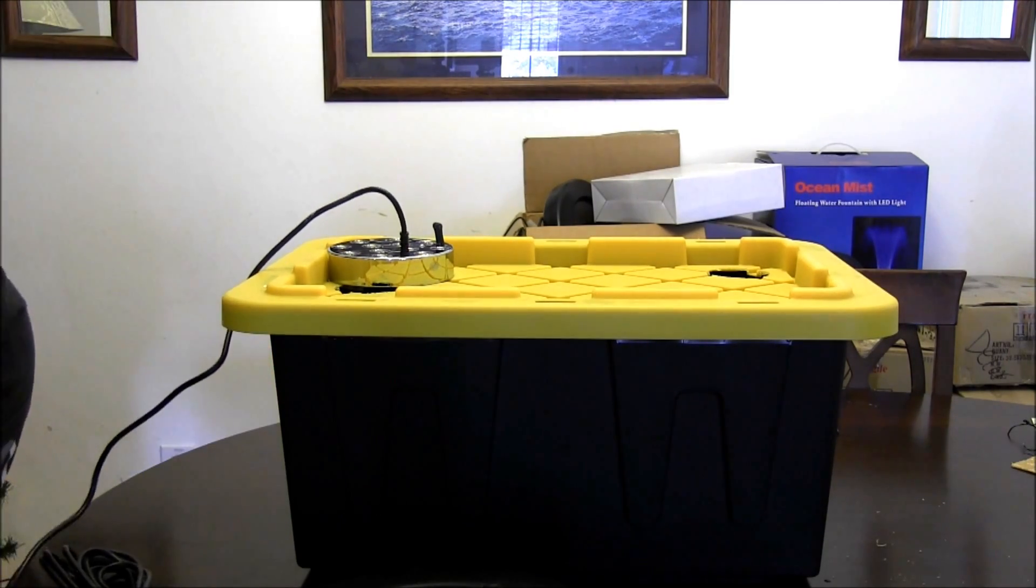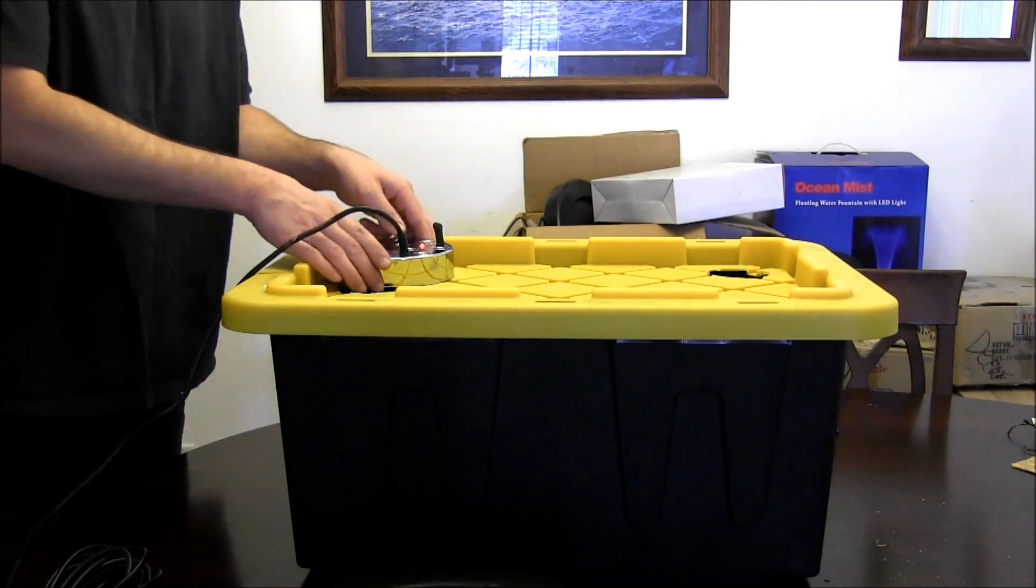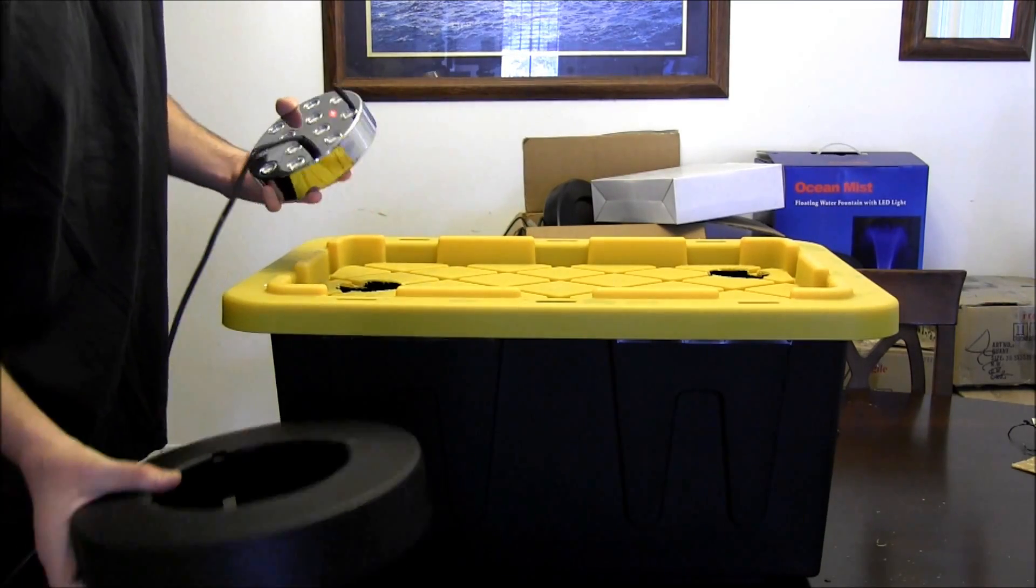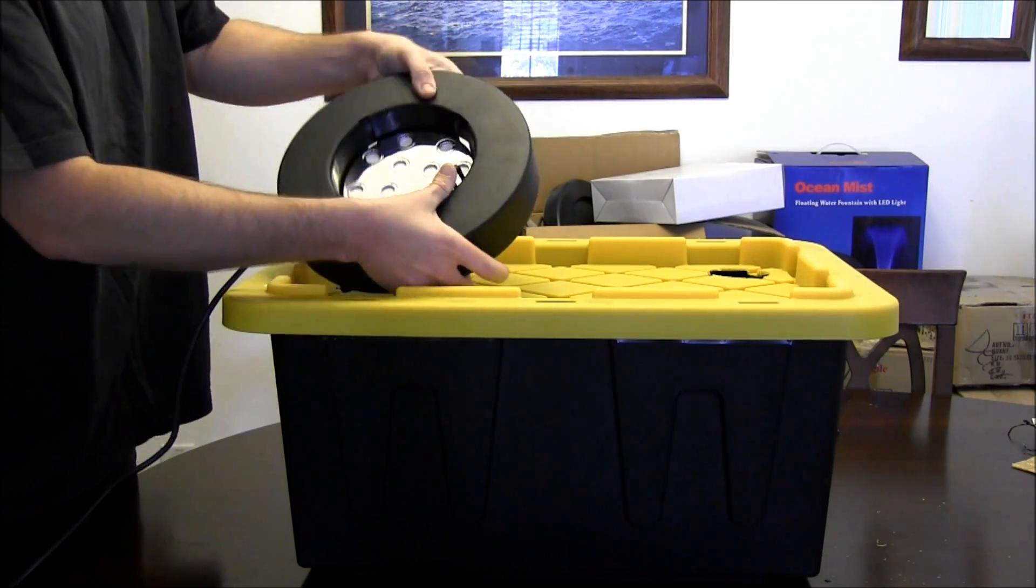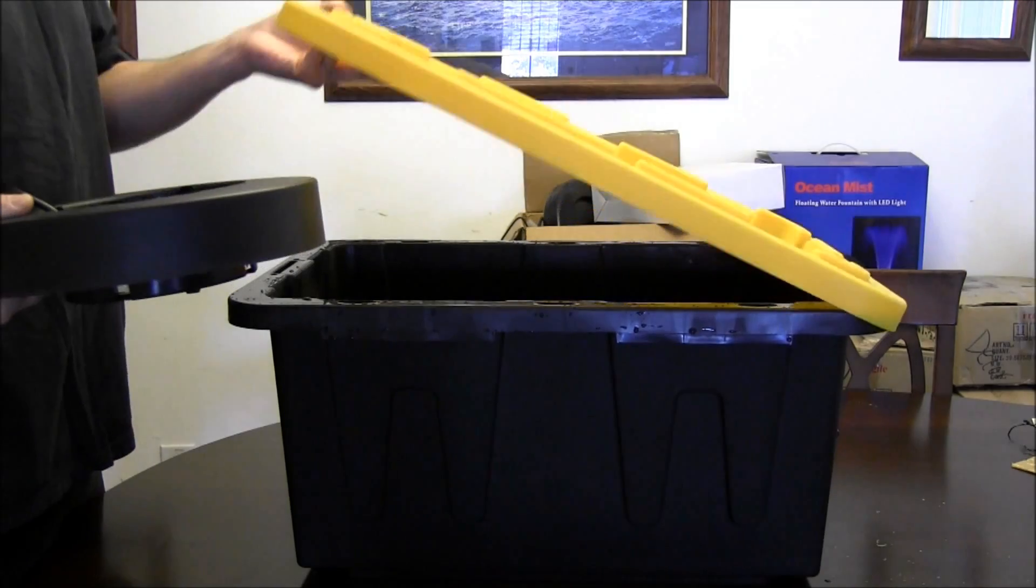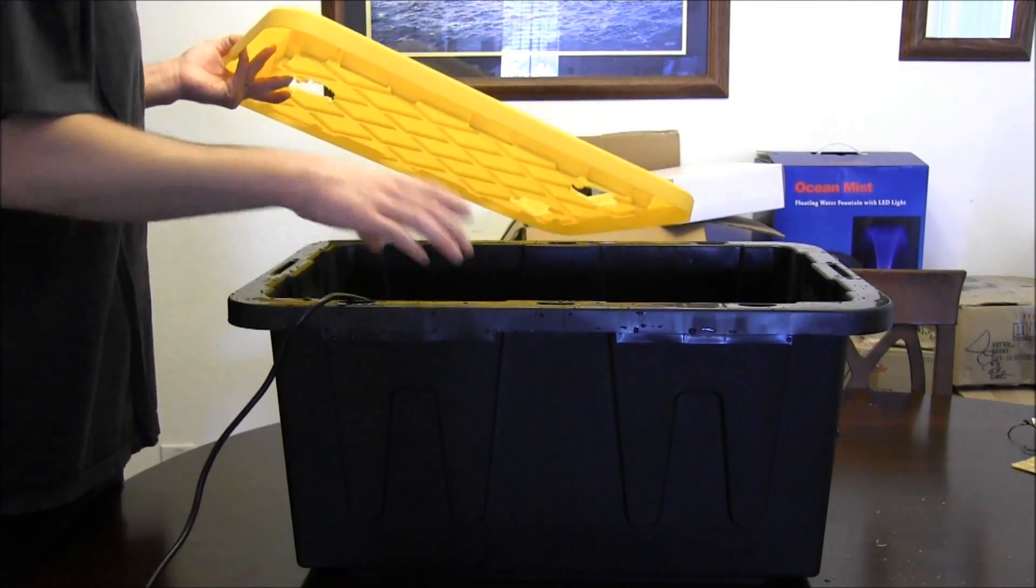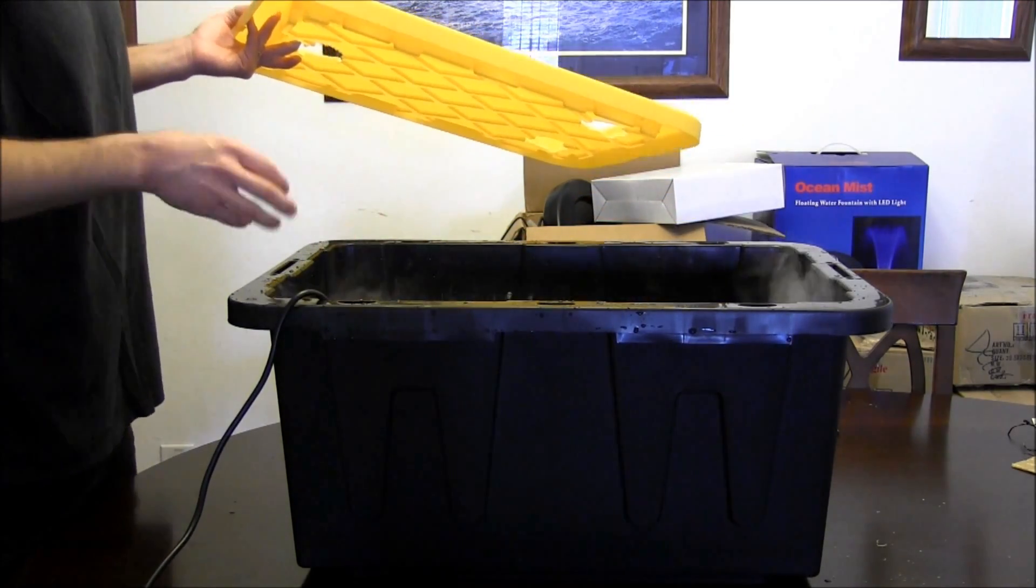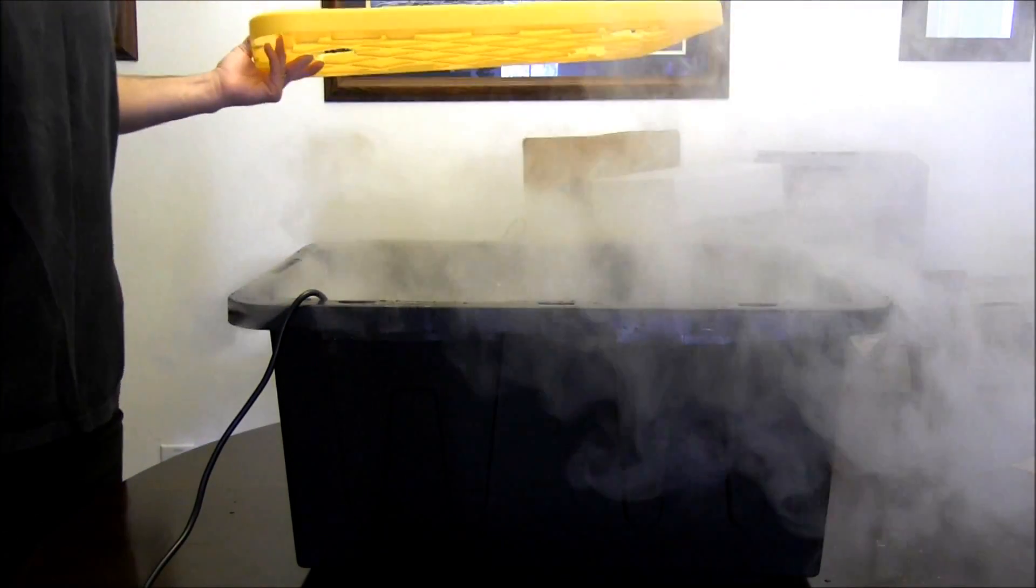Now that we're plugged in, you can see the red light comes on here. It shows that you're getting power to the unit. All we need to do is drop this right down in the float like that and then drop it into our water. As soon as that low water sensor hits the water, it starts making fog right away.